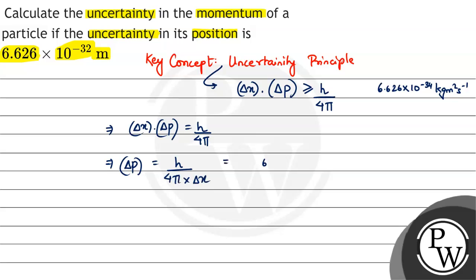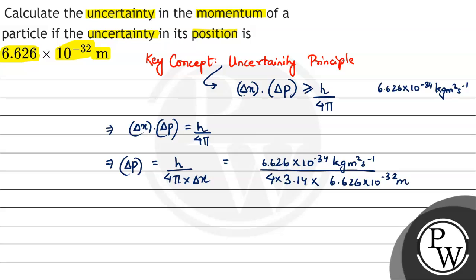This comes out to be 6.626 into 10 to the power minus 34 kilogram meter square per second, divided by 4 into pi, which is 3.14, into 6.626 into 10 to the power minus 32 meter.